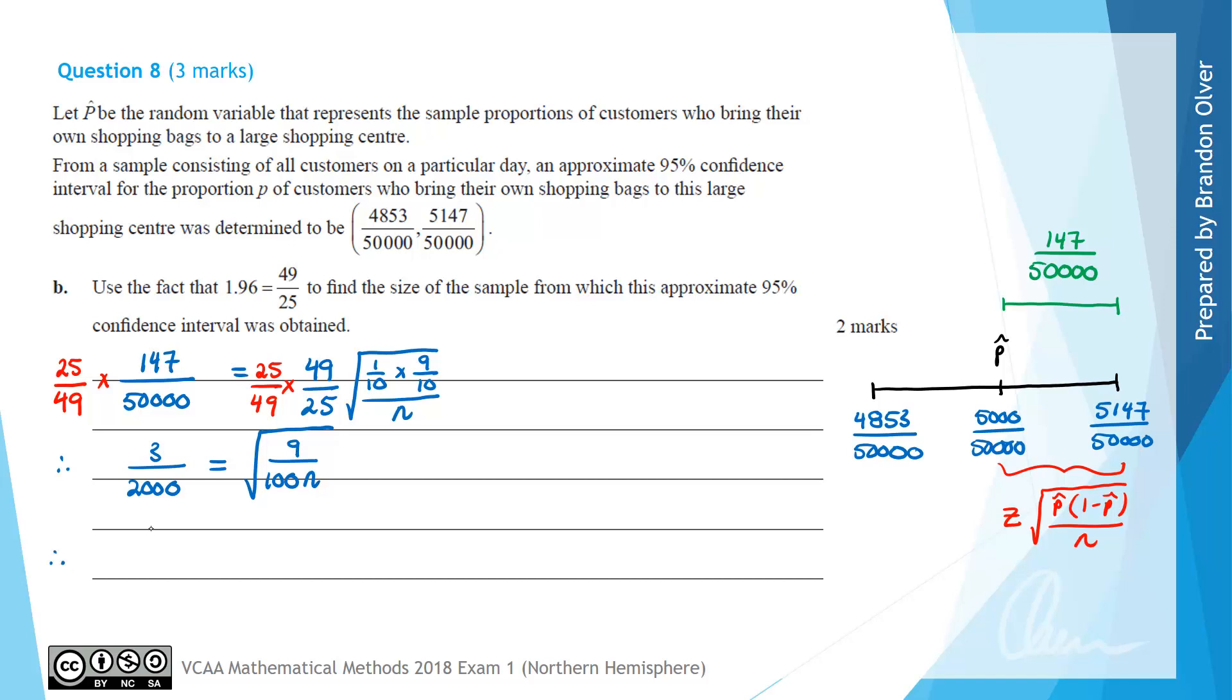Continuing to simplify, 3/2000 equals 3/10 times 1/sqrt(N), since the square root of 9 is 3 and the square root of 100 is 10.